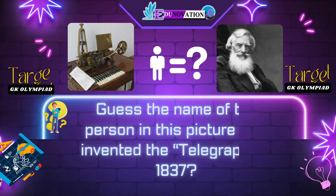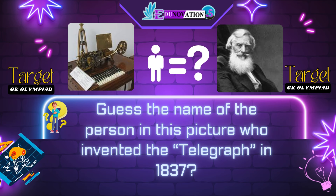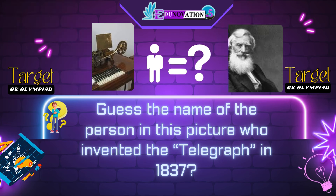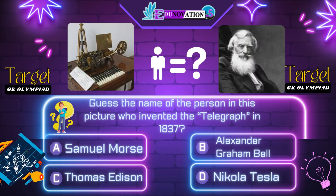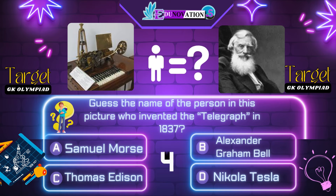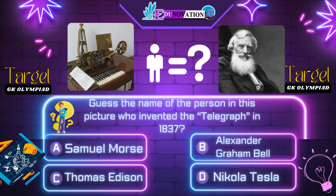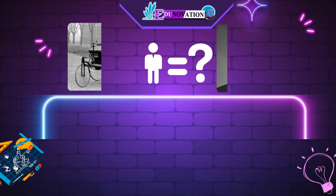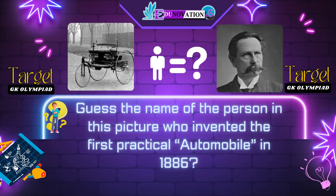Now next question. Guess the name of the person in this picture who invented the telegraph in 1837. Your options are: A. Samuel Morse, B. Alexander Graham Bell, C. Thomas Edison, D. Nikola Tesla. Time's up. Correct answer is A. Samuel Morse.